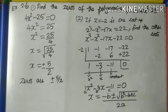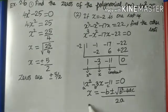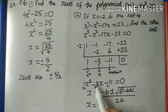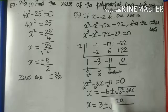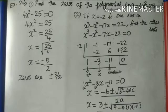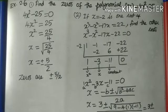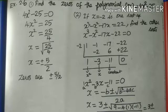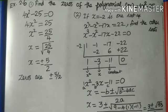Here a = 1, b = -3, c = -11. Substituting: x = -(-3) ± √((-3)² - 4(1)(-11)) / (2×1) = 3 ± √(9 + 44) / 2 = 3 ± √53 / 2. We cannot simplify further, so that is the answer.